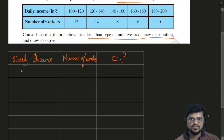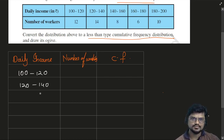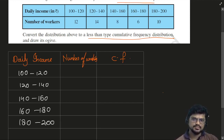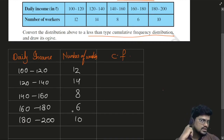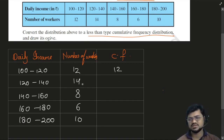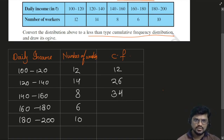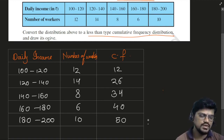So let's write the data. The daily income ranges are: 100–120, 120–140, 140–160, 160–180, and 180–200. The number of workers are 12, 14, 8, 6, and 10. Now the cumulative frequencies are: 12, 26, 34, 40, and 50.